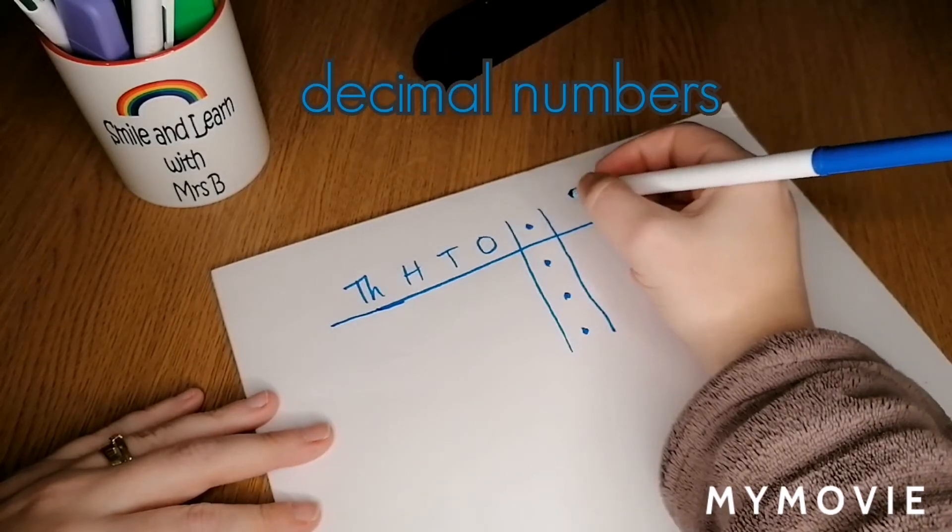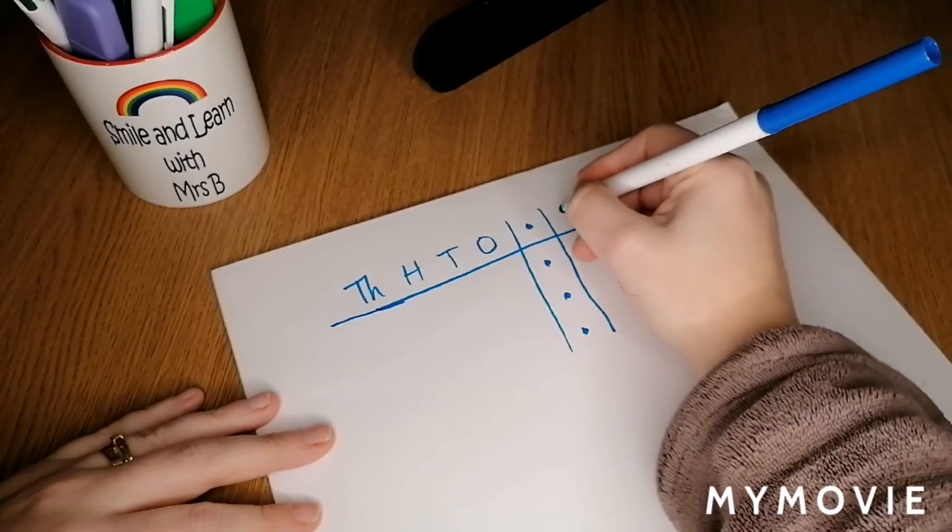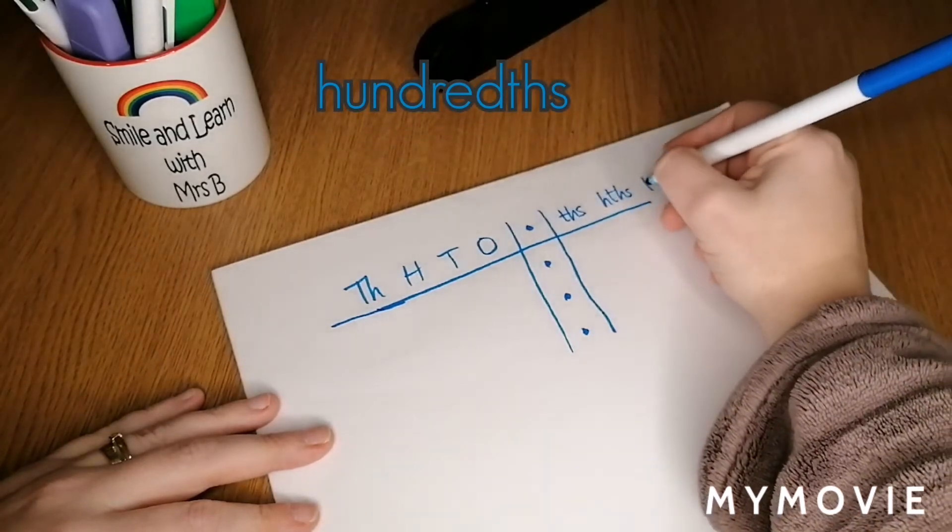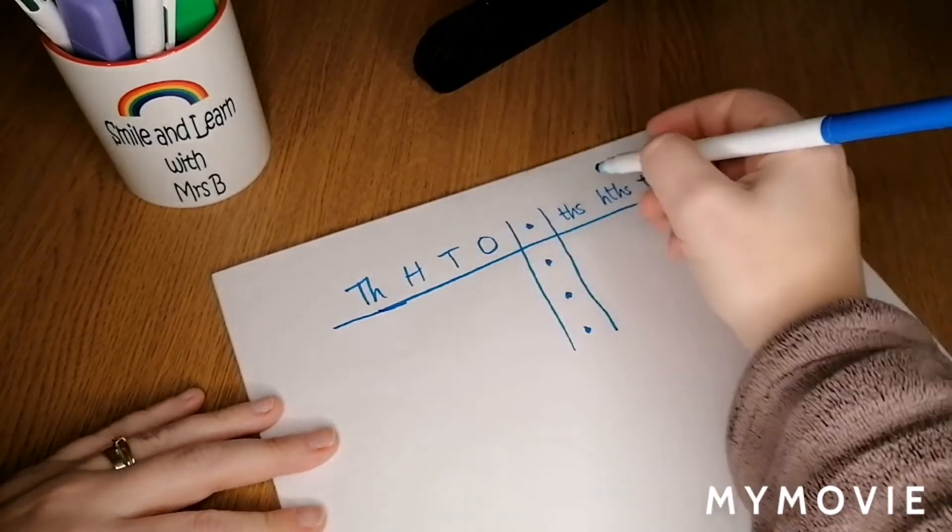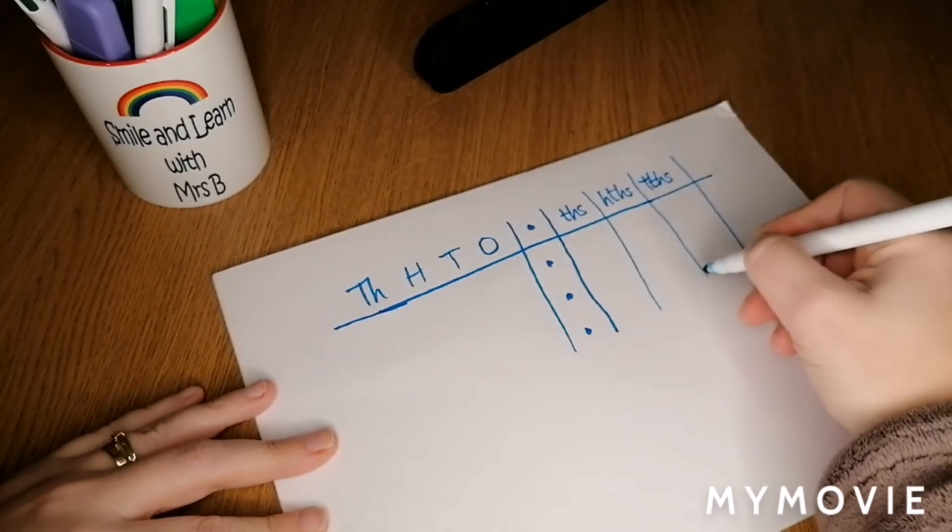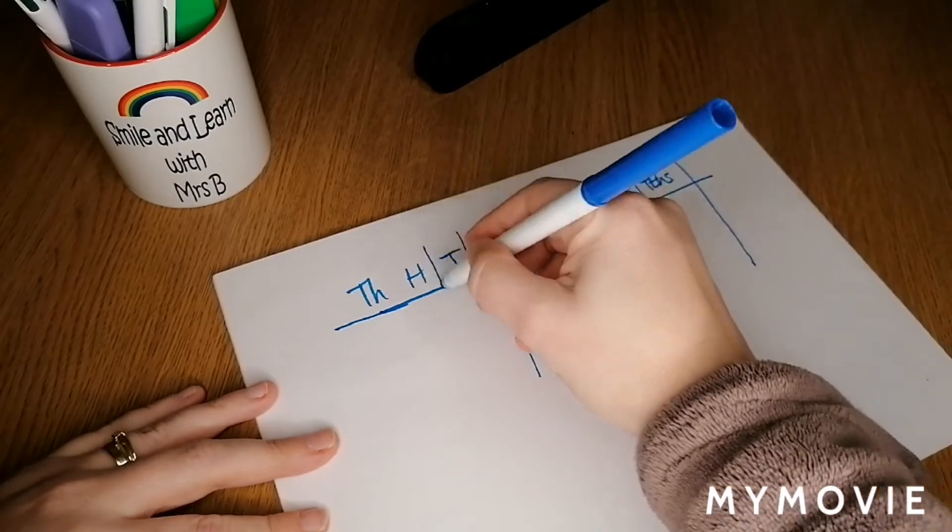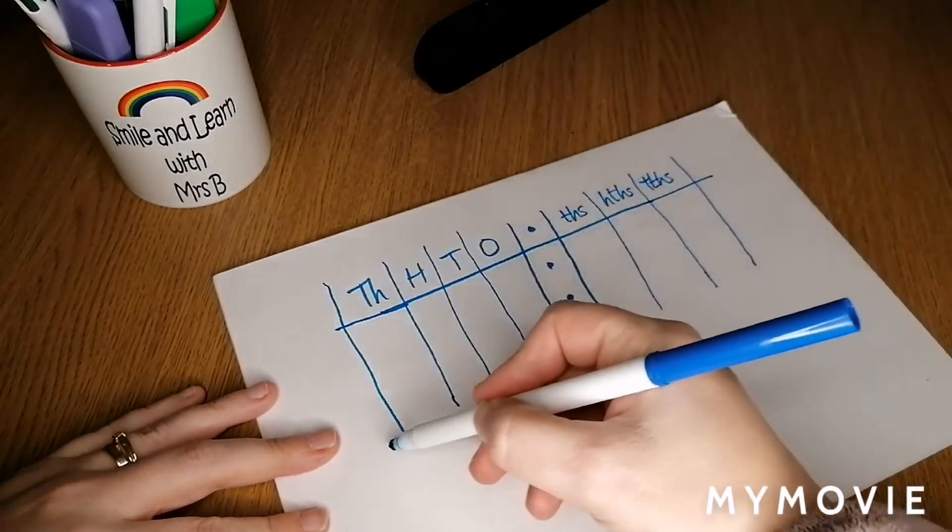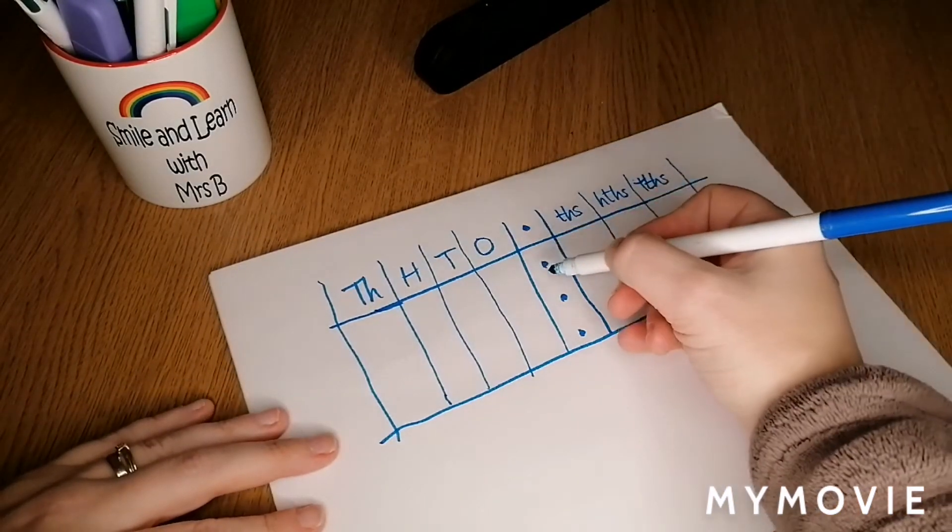...we start to look at tenths, hundredths, thousandths, etc. You might also see a place value grid split into a grid like this, which on squared paper when children are working in school helps them understand the place of numbers—the place value. That's why it's called place value, because it's about the place of numbers.